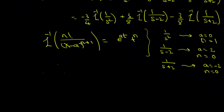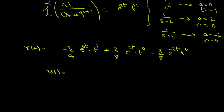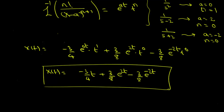Therefore, x of t equals minus 3 over 4 times e to the power of 0 times t to the power of 1 plus 3 over 8 times e to the power of 2t times t to the power of 0 minus 3 over 8 times e to the power of minus 2t. Simplifying, x of t equals minus 3 over 4 times t plus 3 over 8 times e to the power of 2t minus 3 over 8 times e to the power of minus 2t.